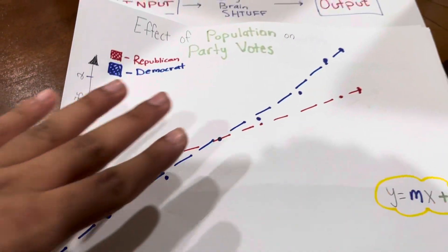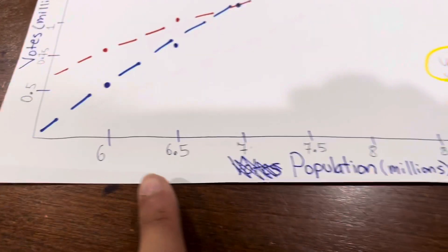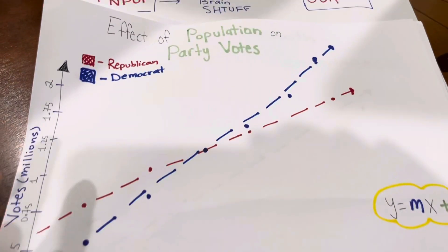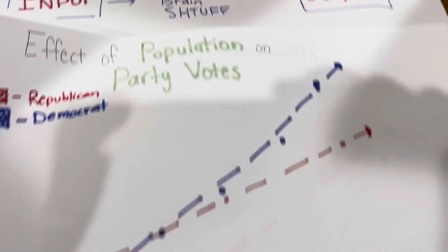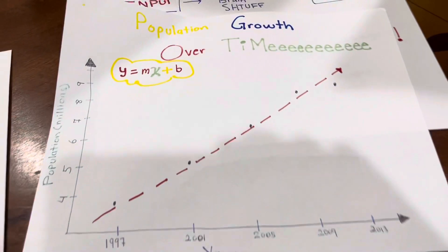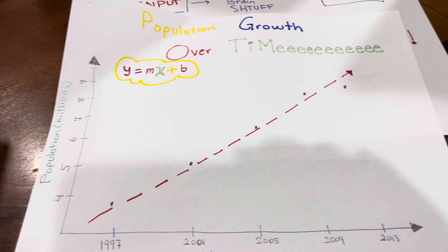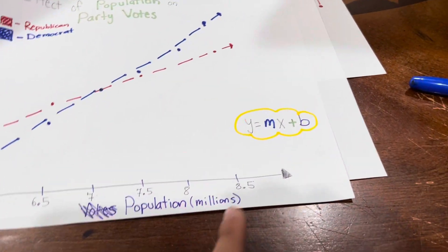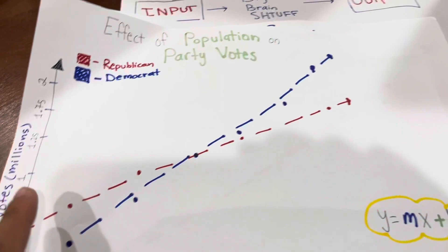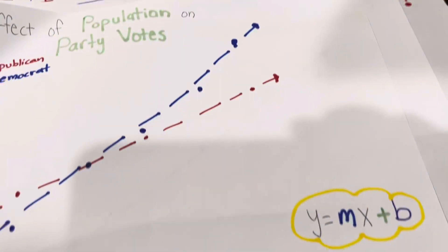I simply made an analysis of how the votes would correlate based on the population. Using the past algorithm where we predict the future population, if you can predict the future population, we can input that future population into this algorithm to predict future votes. That's essentially what I'm doing here.